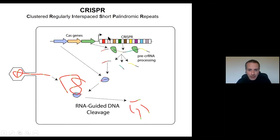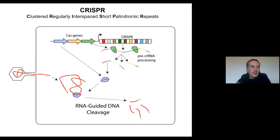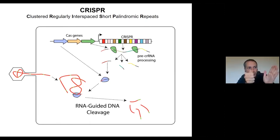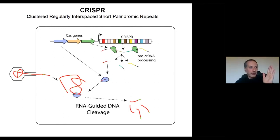The protein will bind to this RNA and be carried to the DNA of the virus. This protein has a second function: to chop DNA. When the bacteria is transporting this RNA that will hybridize with the DNA of the virus, the protein that is attached will start to chop the DNA of the virus and degrade it. This way, the bacteria can actually survive the viral infection.